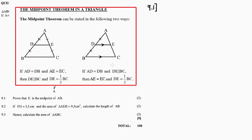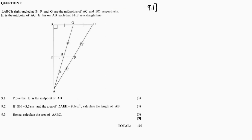Another scenario for the midpoint theorem: if AD equals DP and DE is parallel to BC, then the conclusion is that AE equals EC. So if this is parallel to that and this is equal to that, the conclusion is that the other two sides are bisected — this is the second scenario of the midpoint theorem.